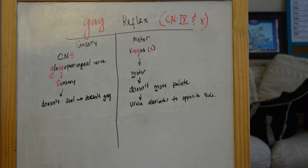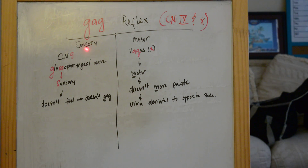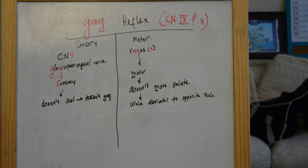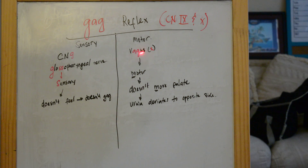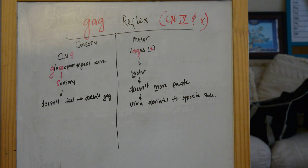The gag reflex involves two cranial nerves: cranial nerve 9 and cranial nerve 10. As with any reflex, there are sensory and motor components. The sensory component involves cranial nerve 9, the glossopharyngeal nerve, which senses touch to the posterior side of the throat and relays that information to the vagus nerve, which provides motor innervation to the soft palate and the uvula, causing contractions that elevate the palate and uvula.